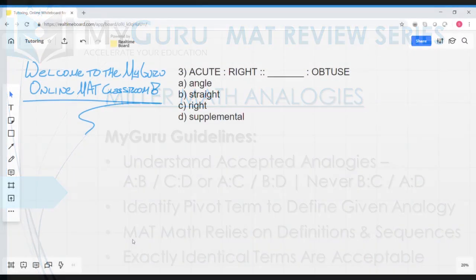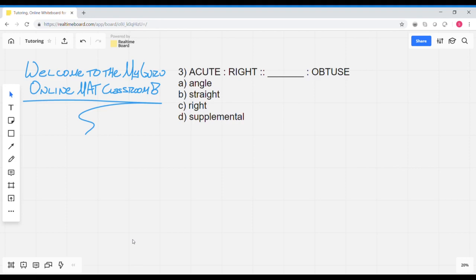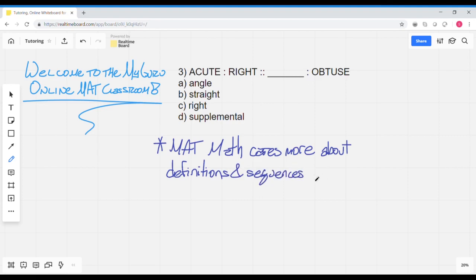Now for many folks, the MAT represents an alternative to the GRE precisely because it doesn't have calculation-based math, and it still really won't. You might see some problems that deal with basic ratios, but really MAT math cares more about definitions and sequences than calculation.